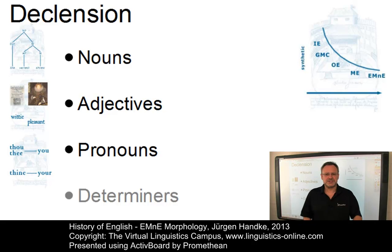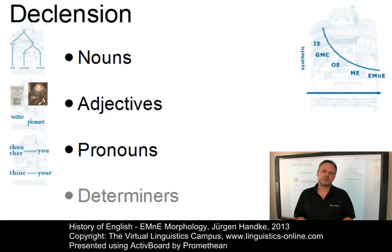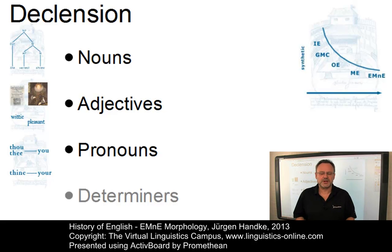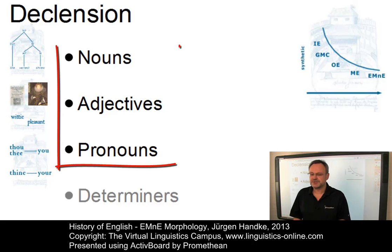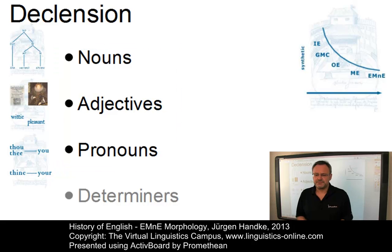The system of declensions — that is, nouns, adjectives, pronouns, determiners, etc. — was almost identical to that of Middle English. The following word classes were declined in early modern English: nouns, adjectives, and pronouns. Determiners were no longer inflected.